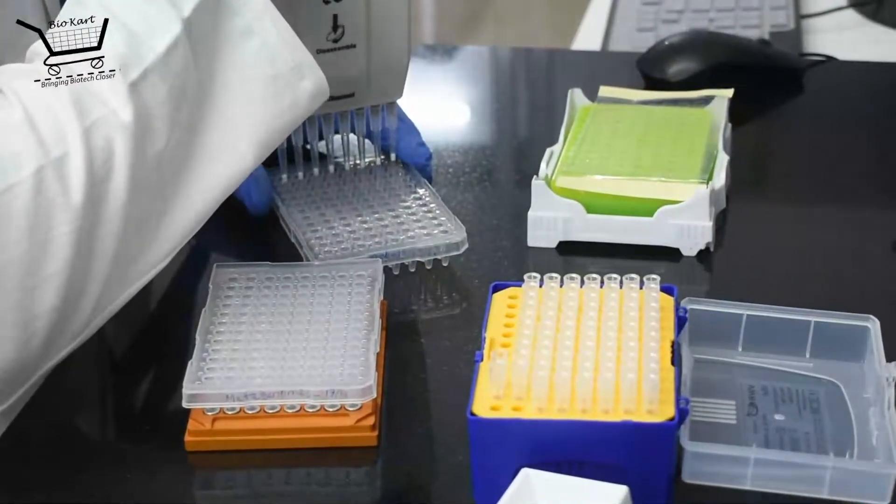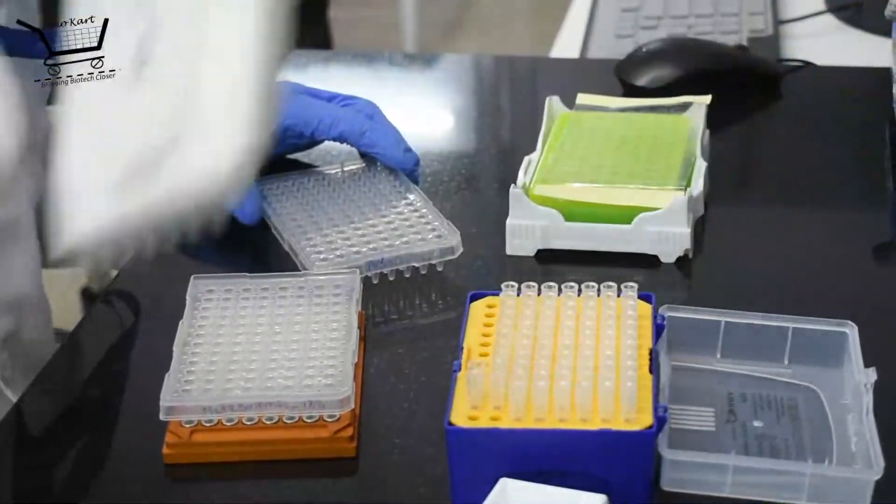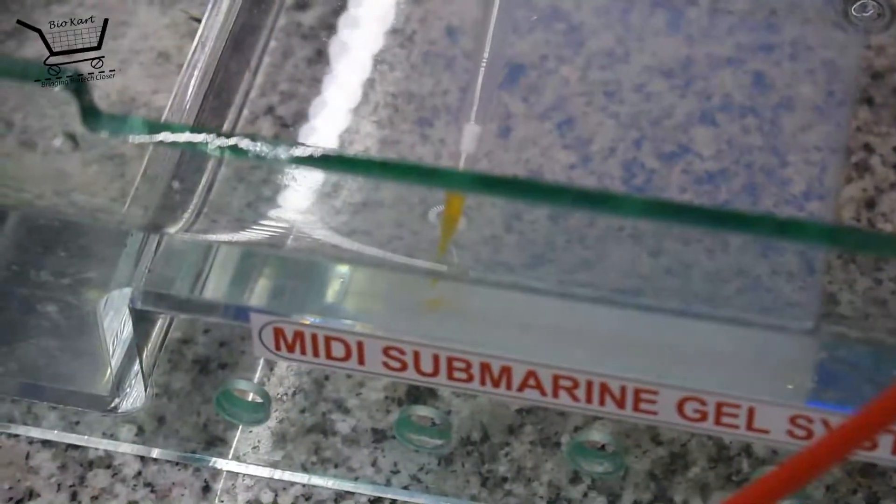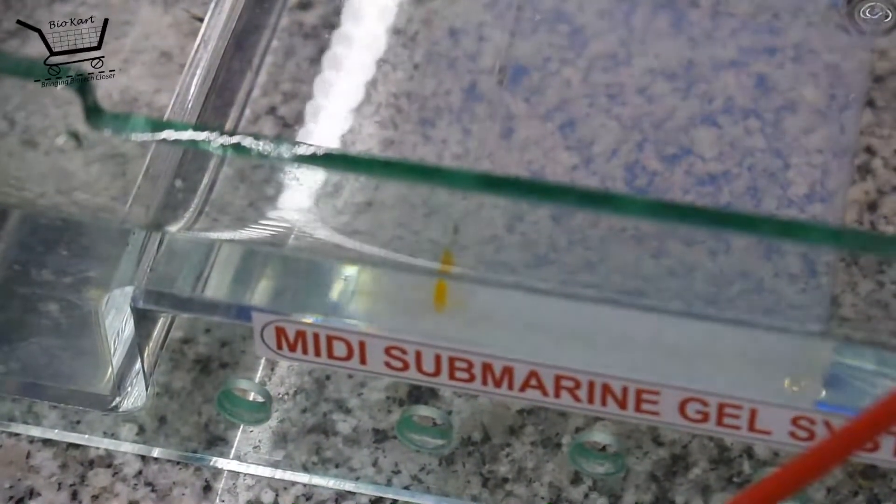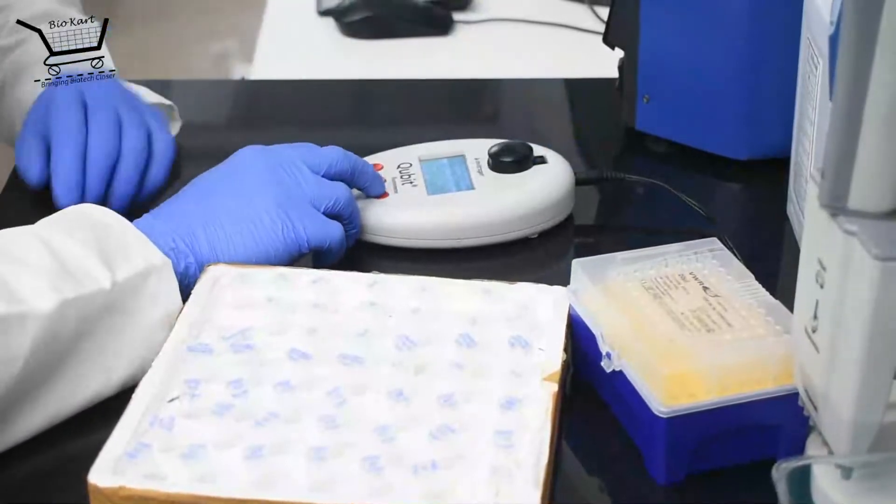After magnetic purification, the PCR product is subjected to another round of gel QC and concentration check. The concentration check is done using Qubit. Once the quality check has passed our criteria, barcoding is carried out with another set of PCR reactions.